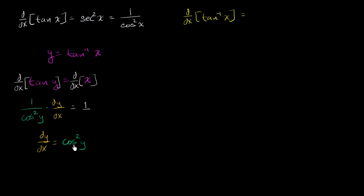Like we've seen in previous videos, this isn't that satisfying, because we've written the derivative of y with respect to x as a function of y. But what we're really interested in is writing it as a function of x. To do that, we need to express this somehow in terms of the tangent of y, since we already know that tangent of y equals x. To introduce a tangent of y, we'd want a sine divided by a cosine — but here we just have a straight cosine squared y, so this will take a little more experimentation.